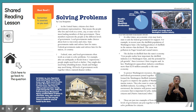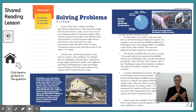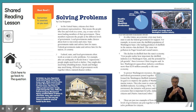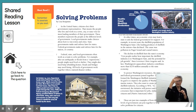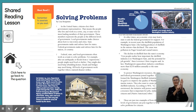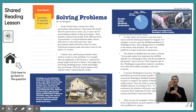In the United States, citizens elect their government representatives. That means the people who live and work in a town, city, or state vote for most leading members of their government. These members represent the people at different levels of government. Local governments make choices about how to run cities or towns. State governments make and enforce laws in states. Federal governments make and enforce laws for the nation or country.